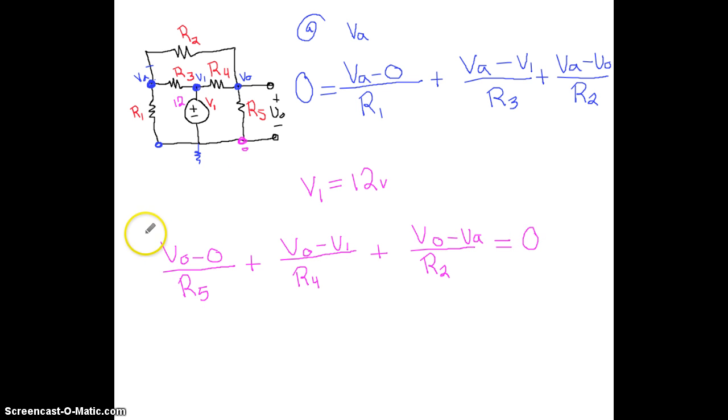Now that we have these three formulas - the one for Vo, what V1 equals, and one with Va - we can put those in a matrix and solve for them very easily.